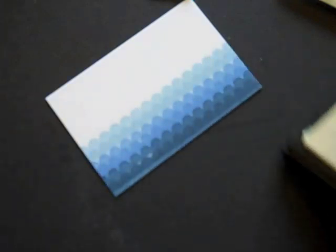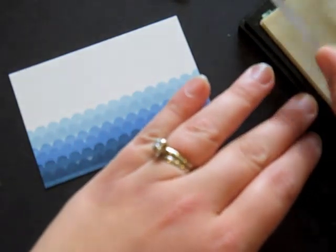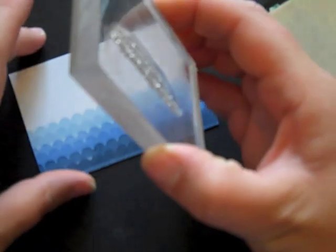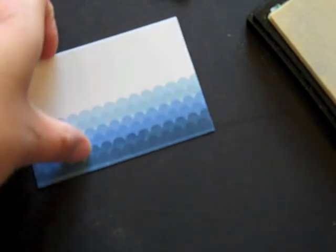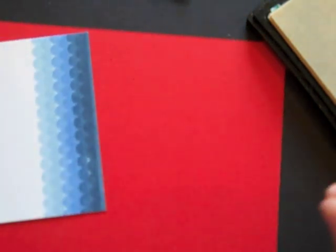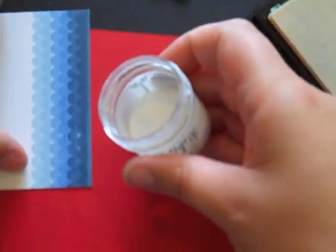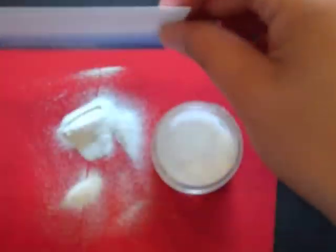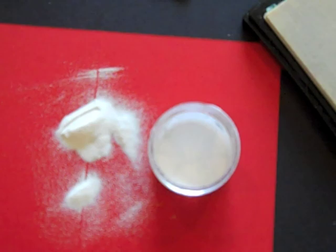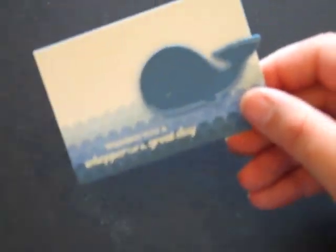I've got a Versamark pad and I've got my sentiment, which is also from Whale Wishes. I'm going to ink that up and this is going to be added right here in the corner. I'm going to take some scrap paper and white embossing powder, and I'm going to just put it over the center, shake off the excess, and go ahead and heat emboss this. Now here is the whale with a little foam tape and the sentiment heat embossed.